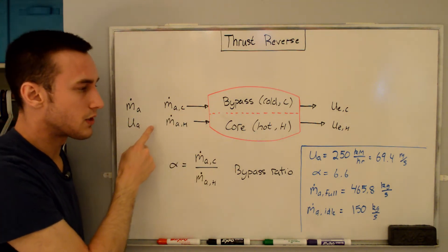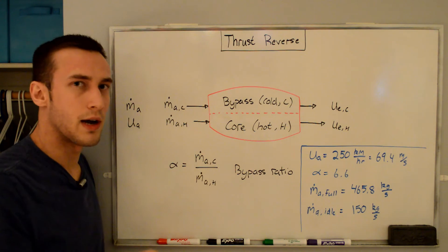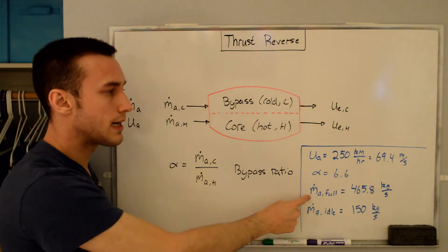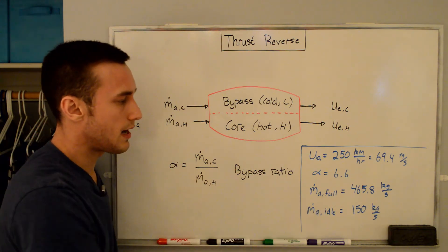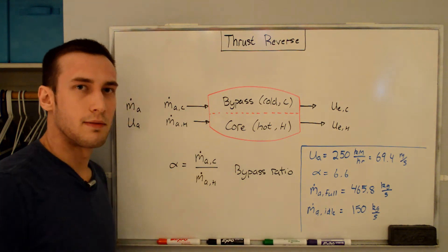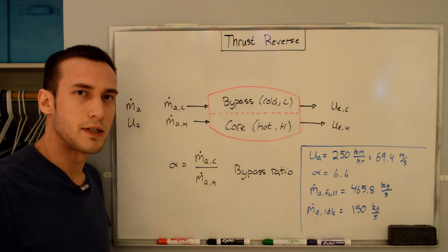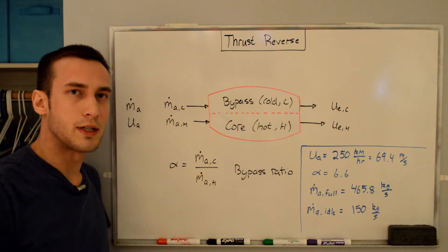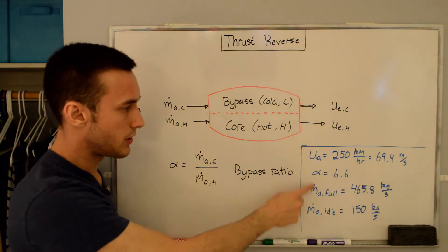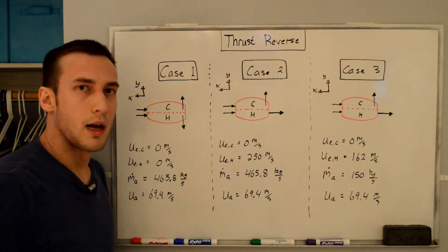There are two different values for the total mass flow rate based on whether we're at full thrust or idle thrust. Full thrust gives 465.8 kilograms per second and idle thrust gives 150 kilograms per second. These values are loosely based off the CFM56-5C engines used on the Airbus A340 — specifically the bypass ratio and the full thrust mass flow rate.